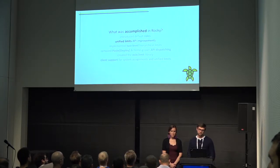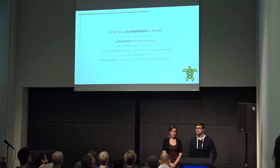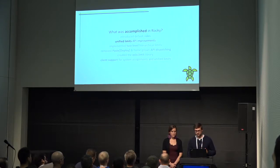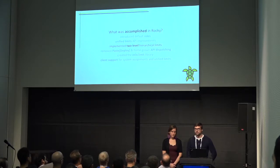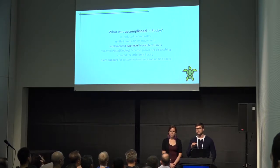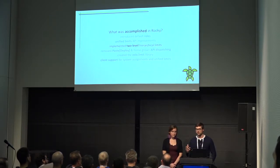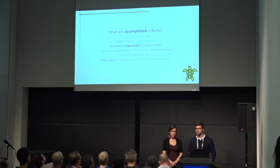We also made several improvements to our Unified Limits API, mainly to make it more consistent with the rest of Keystone's API and to make it easier to consume. We also implemented a hierarchical enforcement model. This model actually has opinions about how limits for resources should work across a tree of projects or a hierarchy of projects. This is supplemental to the flat enforcement model that we originally introduced in Queens when we implemented the Unified Limits work.